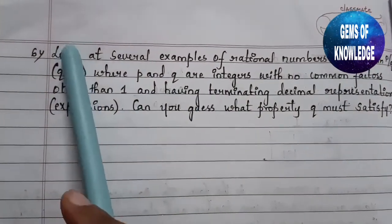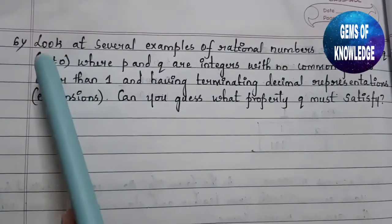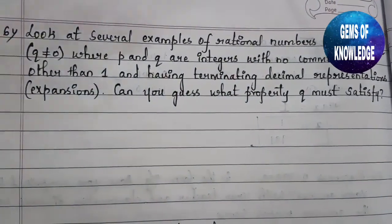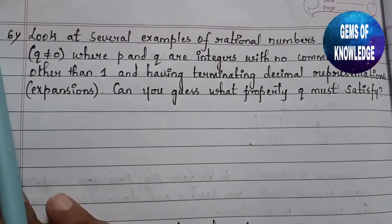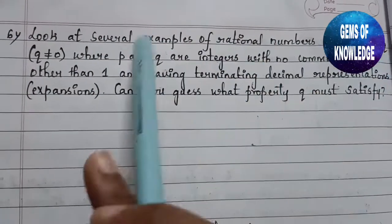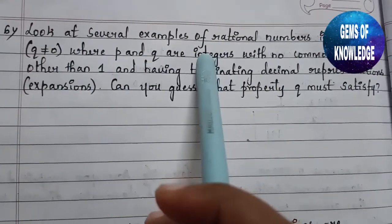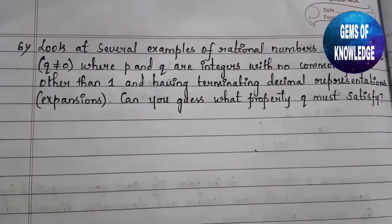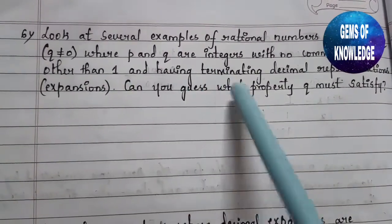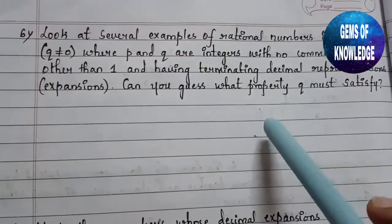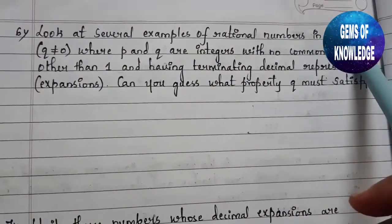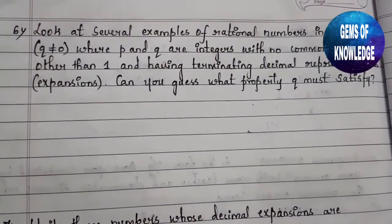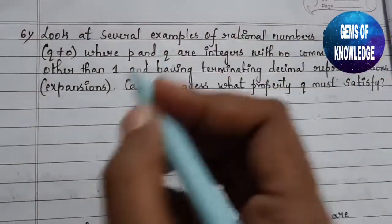Question number 6: Look at several examples of rational numbers in the form p/q, where q is not equal to 0, and p and q are integers with no common factors other than 1. We have to write rational numbers in the form p/q where p and q are integers with no common factors, and they should have a terminating decimal representation. Can you guess what property q must satisfy?